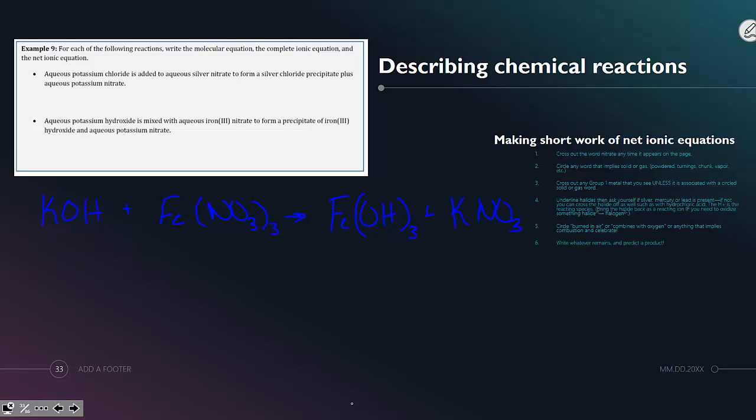Again, first thing is you are going to need to balance the reaction. One potassium makes one potassium, one hydroxide cannot become three hydroxides. So we will need a 3 coefficient here. Meaning three potassiums would need to make three potassiums. And by doing that, we now have a balanced reaction.